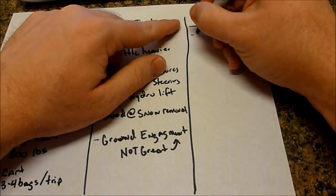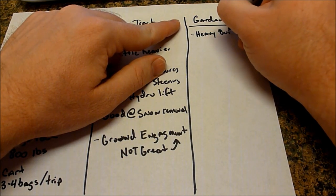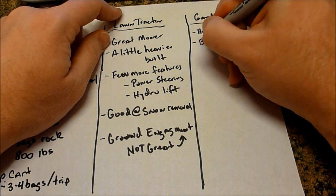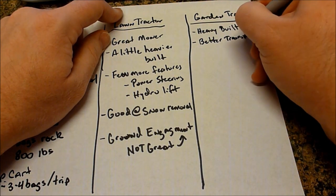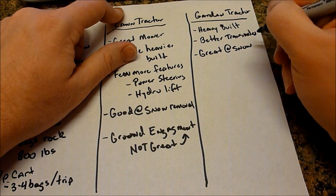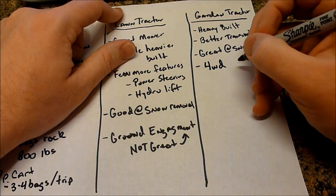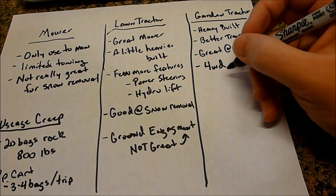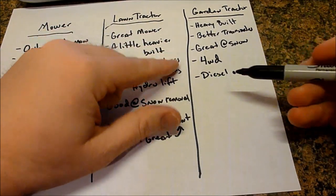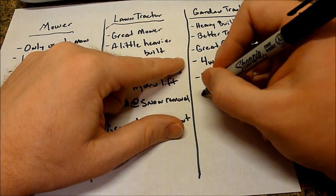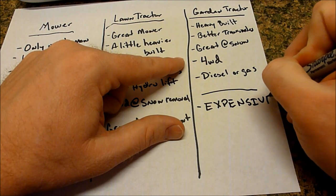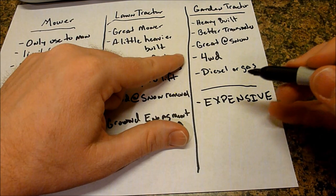Now, then we have the garden tractors. They're heavy built. They have better transaxles. They're great at snow removal. They can also be four wheel drive, the newer models. They cannot be four wheel drive prior to 2002. But they can be four wheel drive. You have the option of diesel or gas. There's lots of positives here. Now, negatives. They're expensive. The tractors are expensive and their attachments are expensive. So that's something to consider.